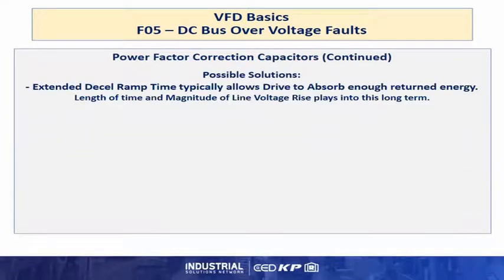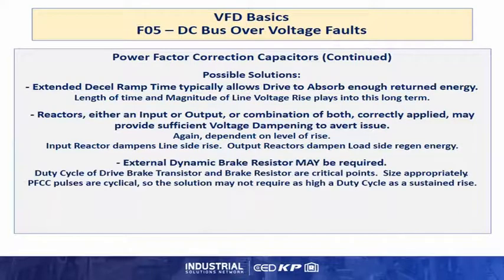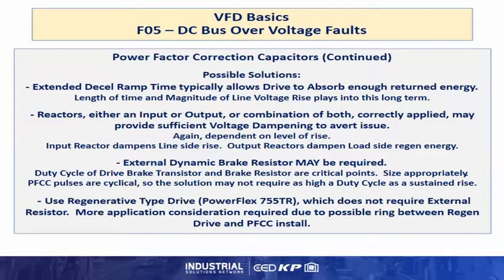Possible solutions: extend the decel ramp time. Reactors, input and or output — in this case input may be more appropriate because it provides impedance between the power factor correction capacitor output and the input of the drive, slowing down the rate of rise on those voltages; oscillations that the drive front end can see convert into DC bus energy. An external dynamic brake resistor may be required, but application considerations have to be noted, as if the power cycle is often enough, duty cycle ranges can be very high for the resistor and transistor. Possibly use a regenerative drive, but additional application considerations are needed due to the interaction of the active front end with the power factor correction capacitors in the system.